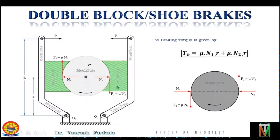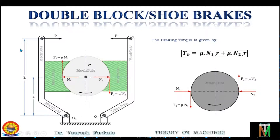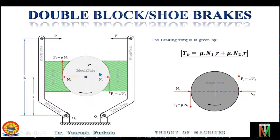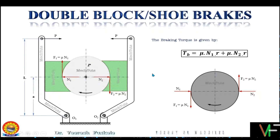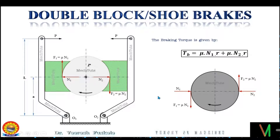To calculate the values of N1 and N2, the same procedure as in single block brake is applied — we take moments about the fulcrum point. To find N1, consider the free body diagram of the left side lever and take moments about point O1. Similarly, to find N2, consider the free body diagram of the right side lever and take moments about point O2, then solve those equations. As this is already explained in the single block brake, we will not repeat it here. Let's proceed with an example where I will explain how to take the moments.